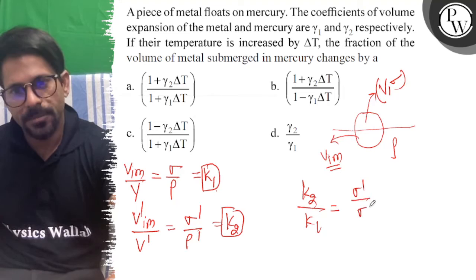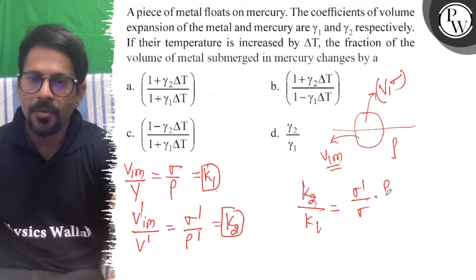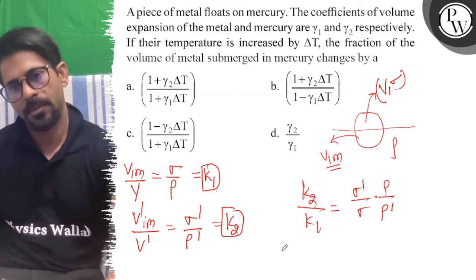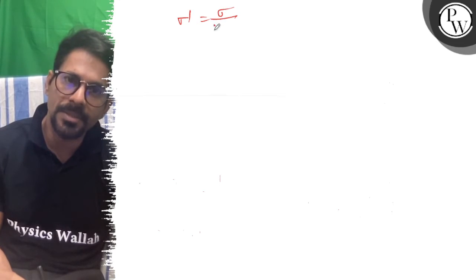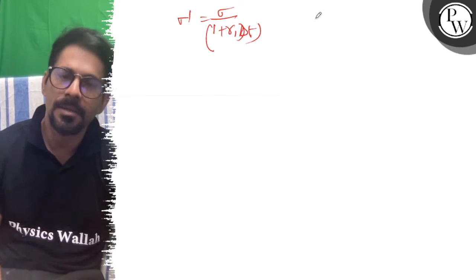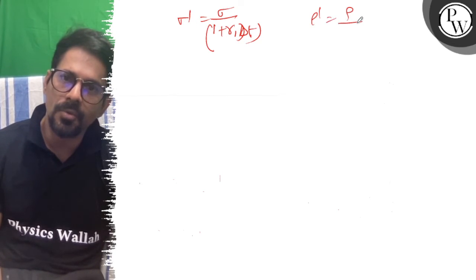I will write this sigma dash upon sigma into rho by rho dash. Now if we write sigma dash upon sigma, what is sigma dash upon sigma? Sigma dash is equal to sigma upon 1 plus gamma 1 del T. And rho dash is equal to rho upon 1 plus gamma 2 del T.